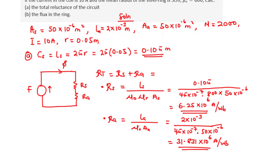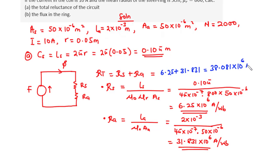Now we add the two values. RT = RS + RA = 6.25 × 10⁶ + 31.831 × 10⁶ = 38.081 × 10⁶ amperes per Weber. This is the total reluctance of the circuit.